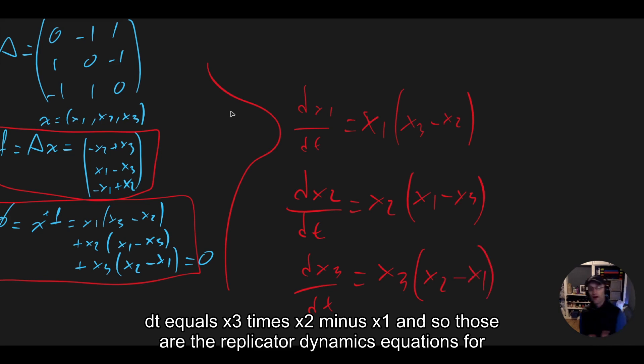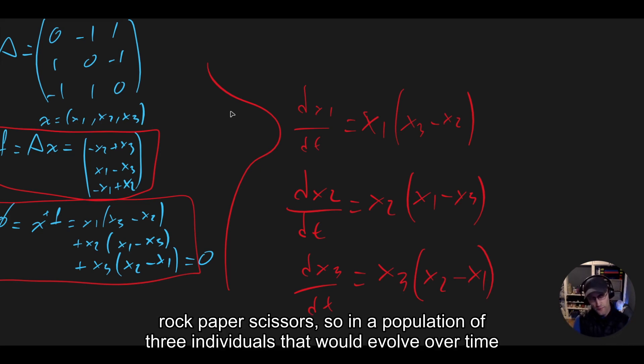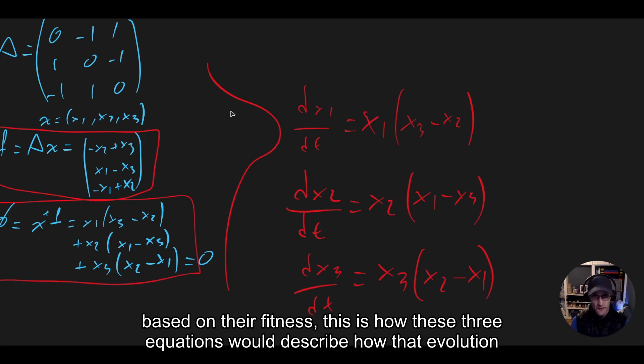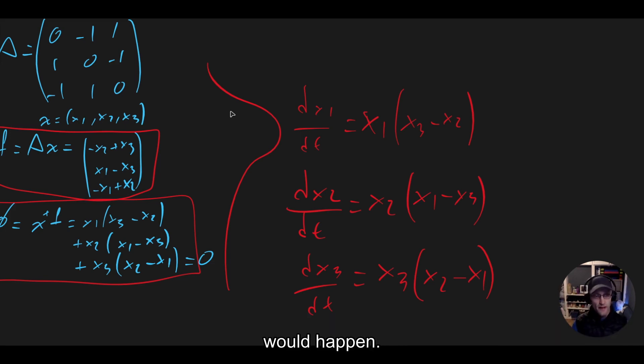And so those are the replicator dynamics equations for rock, paper, scissors. So in a population of three individuals that would evolve over time based on their fitness, this is how these three equations would describe how that evolution would happen.